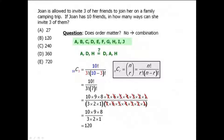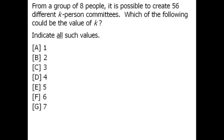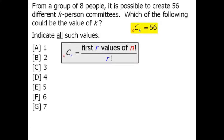In this question we are selecting K people from a group of eight people. Since the order of the selected people does not matter, this is a combination question. The total number of ways to select K people from eight people is equal to 8 choose K, and our goal is to find values of K such that 8 choose K equals 56. We will use a shortcut: N choose R equals the first R values of N factorial all divided by R factorial.